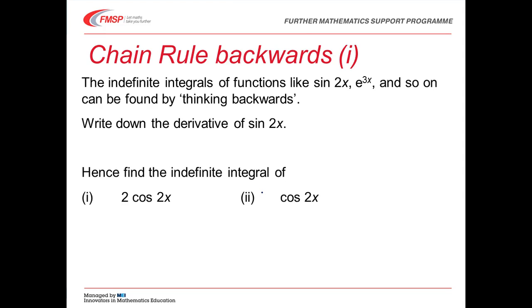Indefinite integrals of functions like sine of 2x and e to the 3x are best found by thinking about the chain rule backwards. Here's an example. Start by writing down the derivative of sine 2x. That's 2 cos 2x. That means the indefinite integral of 2 cos 2x must be sine 2x. And if we want just cos 2x, then we need half of that.